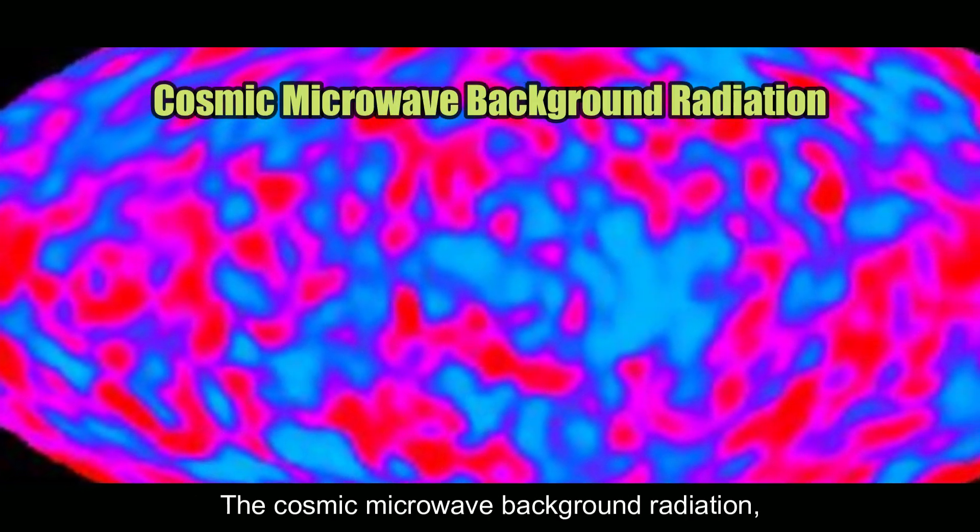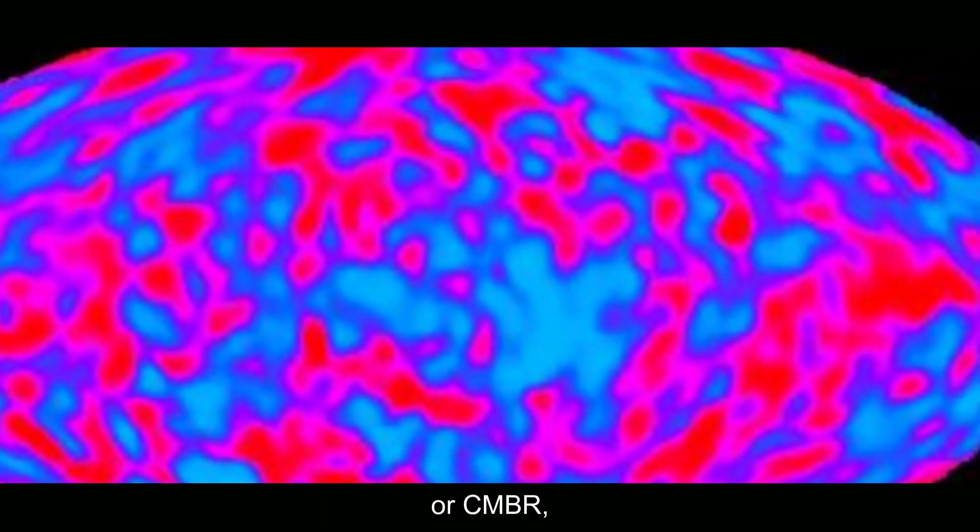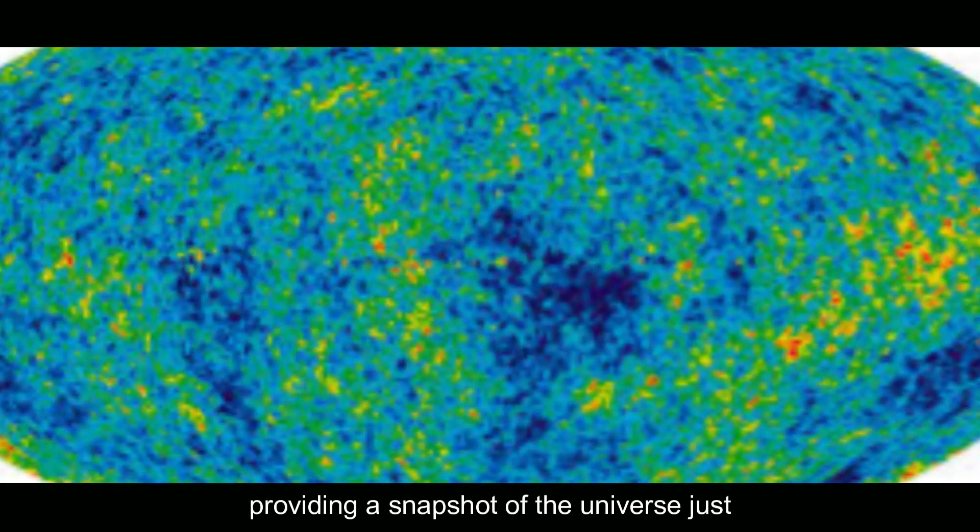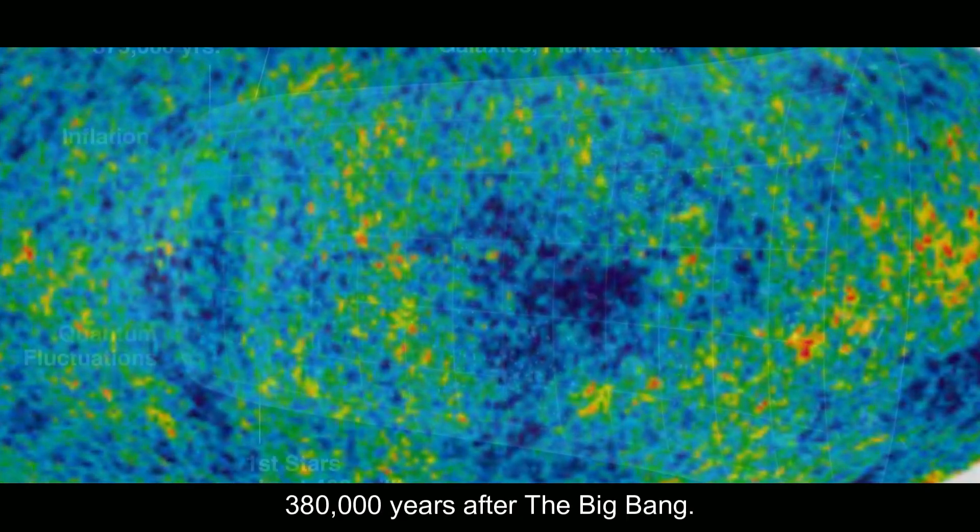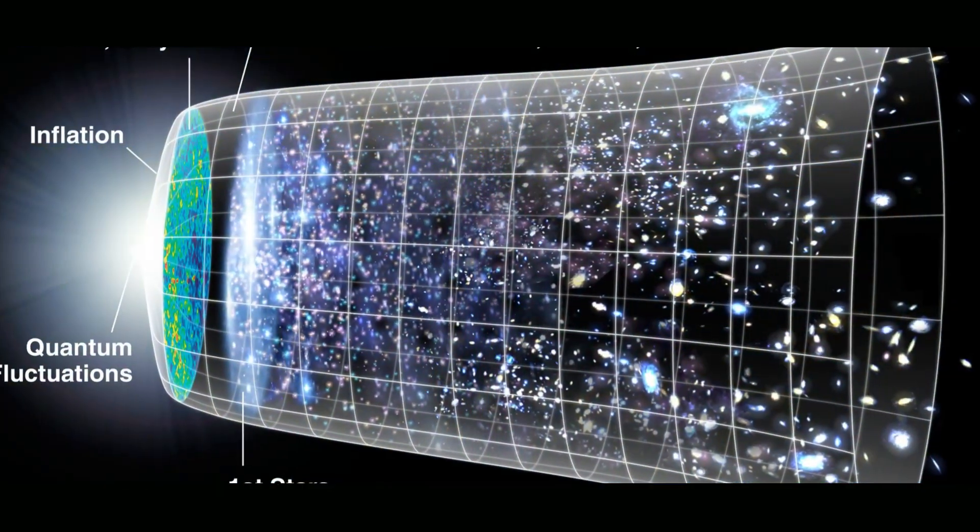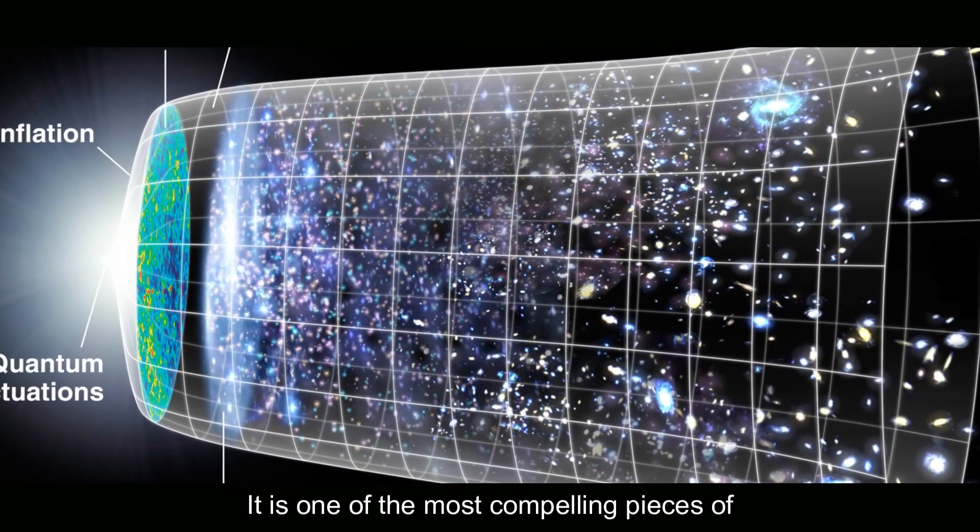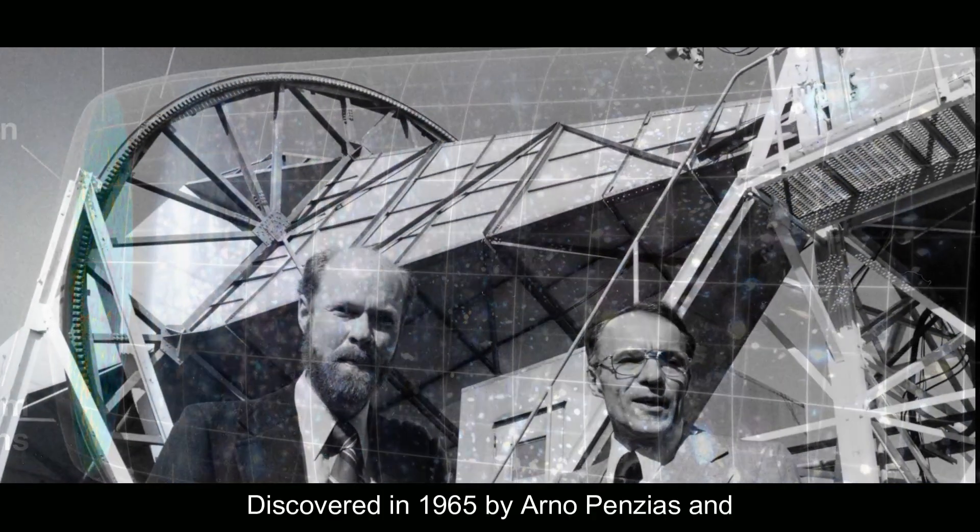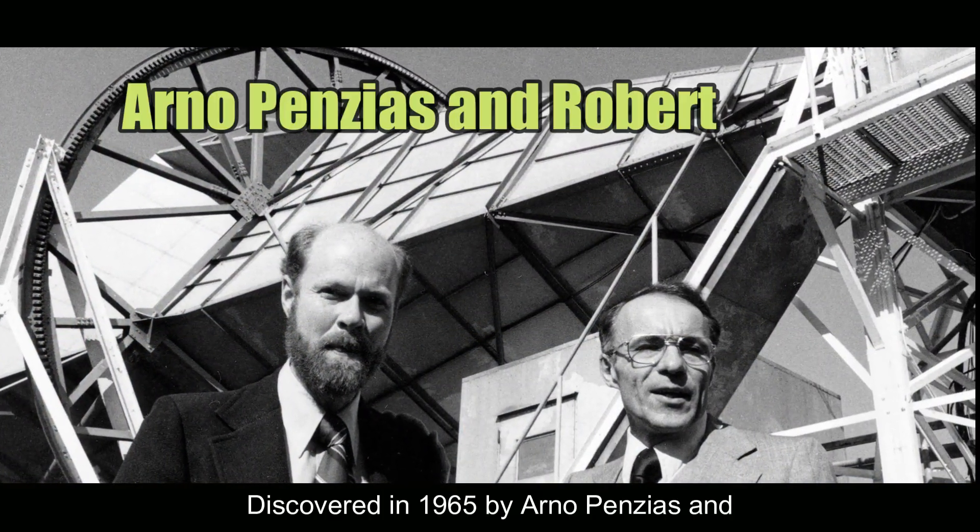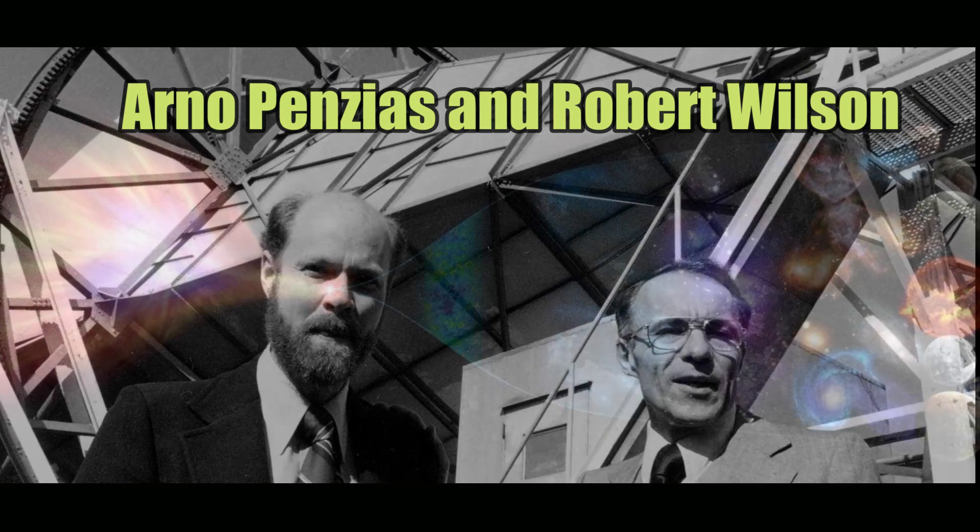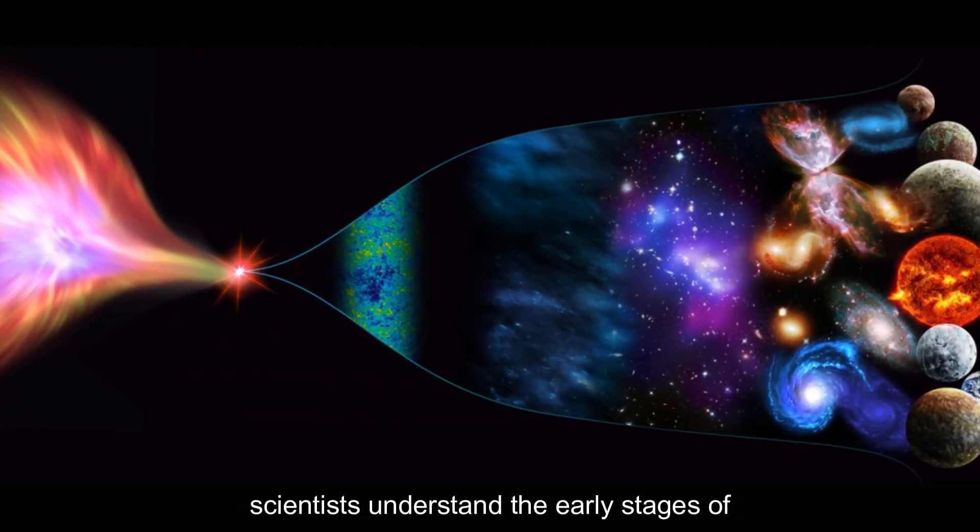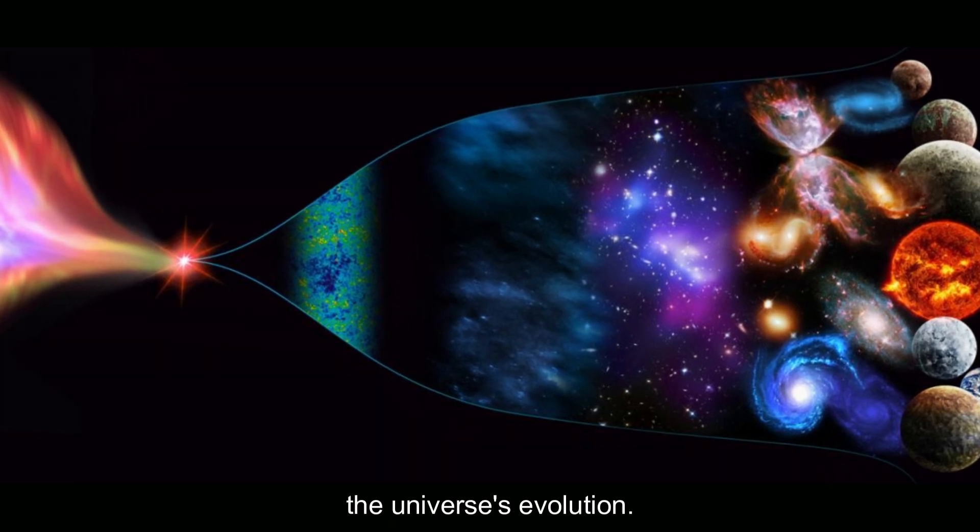The Cosmic Microwave Background Radiation, or CMBR, is a faint glow that fills the universe, providing a snapshot of the universe just 380,000 years after the Big Bang. It is one of the most compelling pieces of evidence supporting the Big Bang Theory. Discovered in 1965 by Arno Penzias and Robert Wilson, the CMBR is a critical clue that has helped scientists understand the early stages of the universe's evolution.